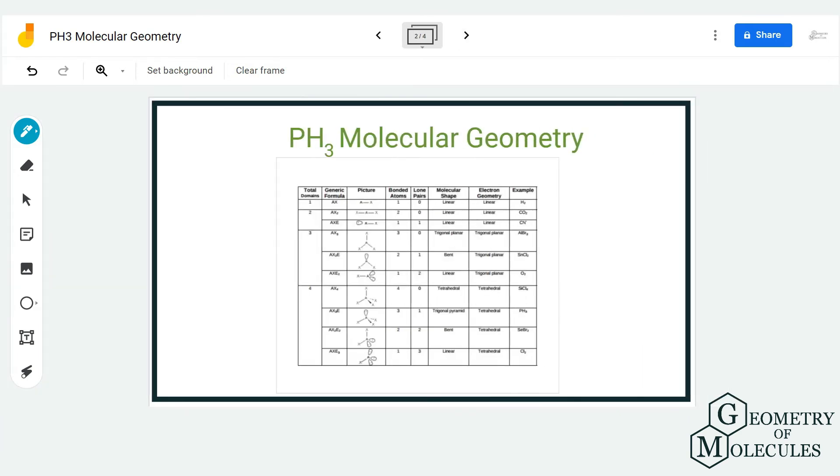Now referring to this table which helps us to find out the molecular geometry, if we know the steric number we can see what the molecular geometry for PH3 might be. As there are four electron regions, or if the steric number is four, out of which one is a lone pair, it will have a trigonal pyramidal molecular geometry.